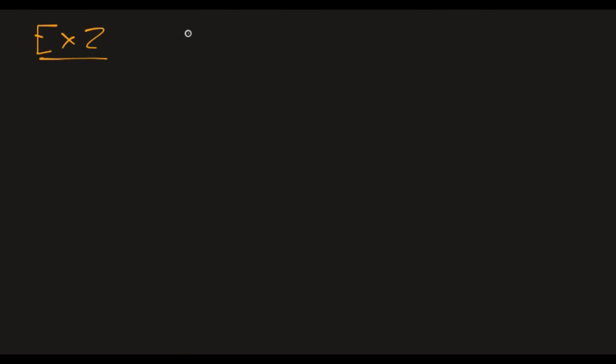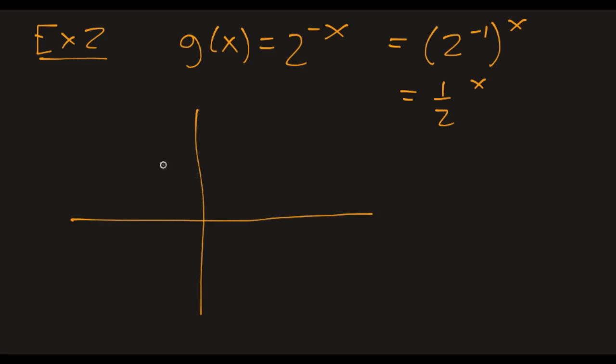So another part of example 2 is g of x being 2 to the negative x. This is the same as saying 2 to the negative 1 to the x. So this is the same as 1 half to the x, our first example. It also can be viewed as taking 2 to the x and reflecting over the y-axis. So instead of going up like this, it comes down like this through the point (0,1). So again, looking at this as either 1 half to the x or a reflection over the y-axis, we can get this general graph. And the 2, if it was 2 or 5 or 10 or whatever, it's just going to affect how steep this actually is.